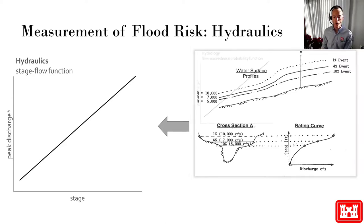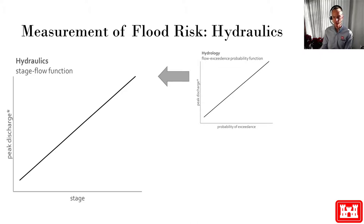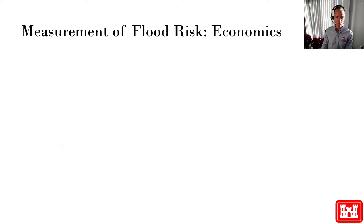Now you can see why we invert the flow frequency axis. For a given frequency event — such as a storm so large that 99% of events produce smaller flows, the 1% annual chance of exceedance event — we can calculate flow. And for a given flow, we can calculate the river stage, the water surface elevation or depth of flooding. We ask economists to tell us, for a given stage or water surface elevation, how much damage would be produced.